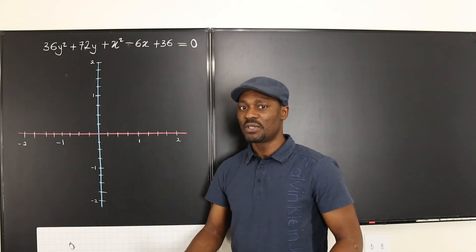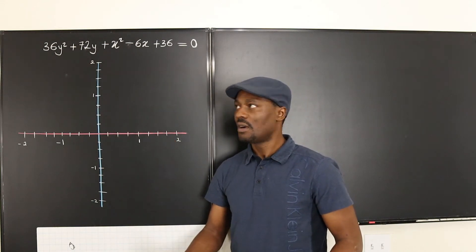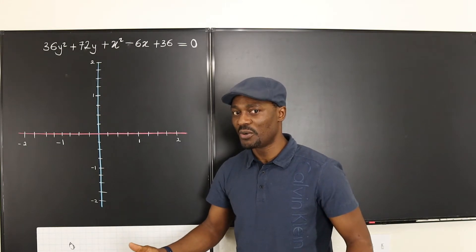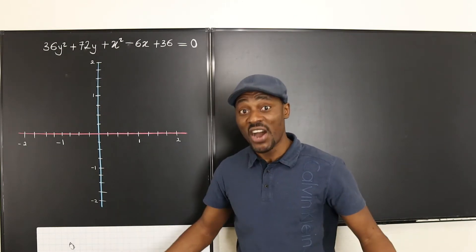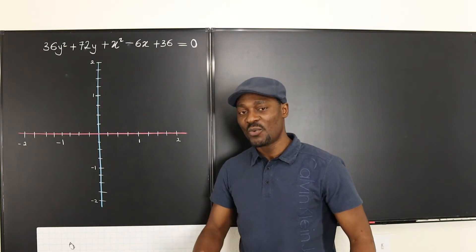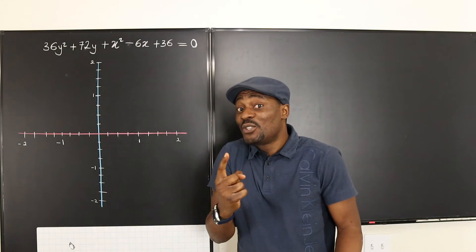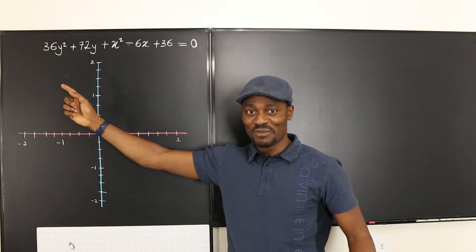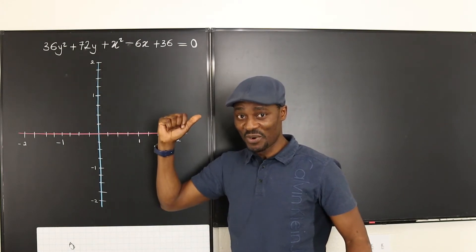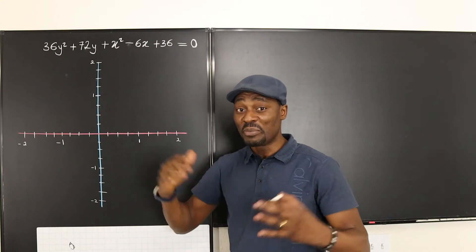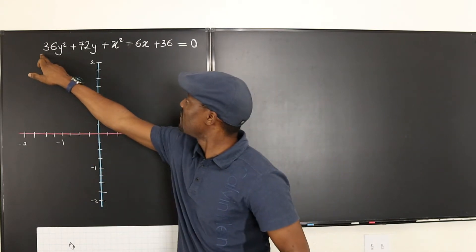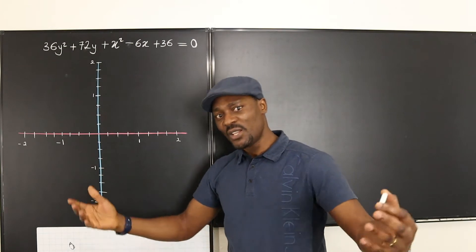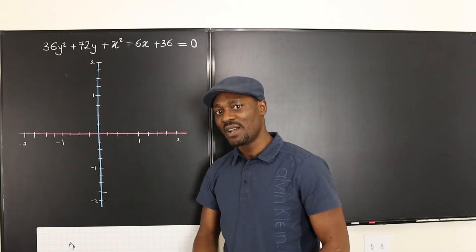How do you know this is an ellipse? Why is it not a parabola, why is it not a circle, and why is it not a hyperbola? Well, the first thing to do is change it from the general form to the standard form. When you complete the squares for both expressions, whatever you see is what tells you what it's going to be.